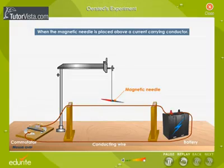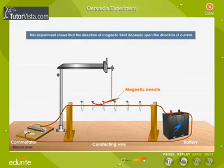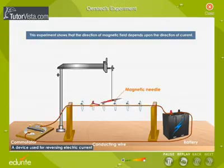He also observed that if the direction of the current in the wire is reversed, the deflection in the compass-needle is also reversed. This experiment shows that the direction of the magnetic field depends upon the direction of current.